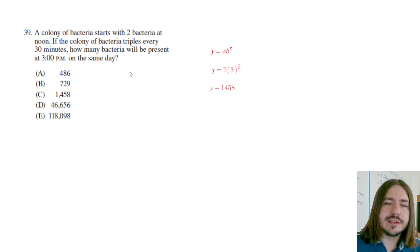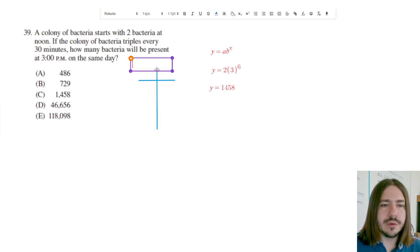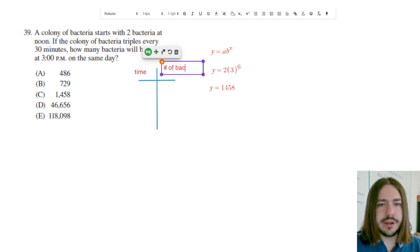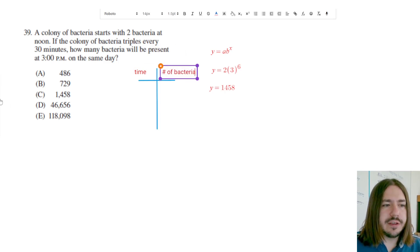But if you're not sure how to write this as an exponential equation, you could alternatively just make a table. Just kind of keep track of how many bacteria there are at these 30 minute increments. So if this is the time, if my left column is the time and my right column is the number of bacteria, I can just approach it like this and say, all right, at noon, which is 12 o'clock, we've got two.